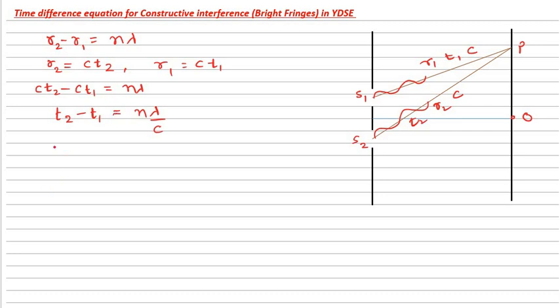For any kind of waves, we know that frequency multiplied by wavelength is equal to speed. If I transfer this lambda over here, frequency is equal to C upon lambda. If I take the reciprocal, I get the time period is equal to lambda by C. Now in this equation number 1, T2 minus T1 is equal to N.